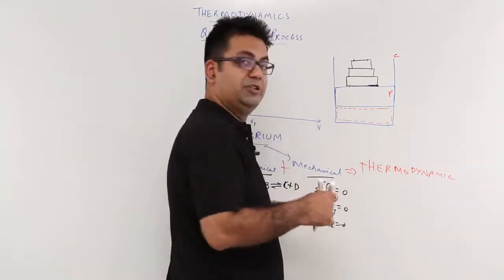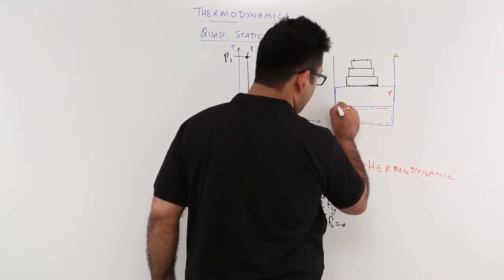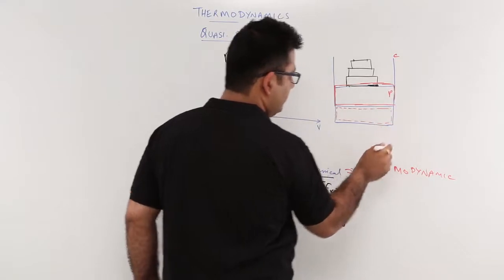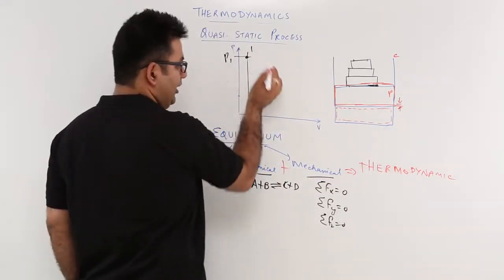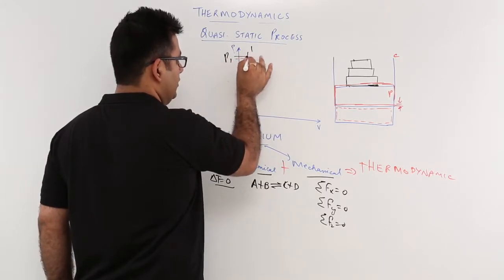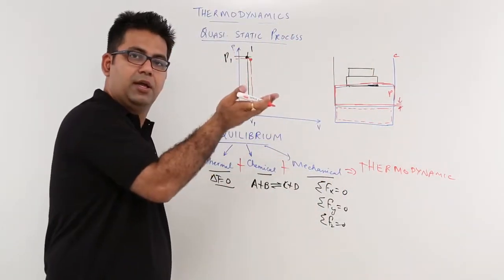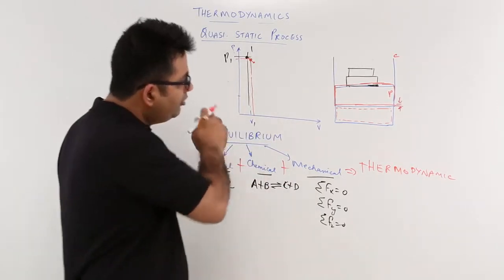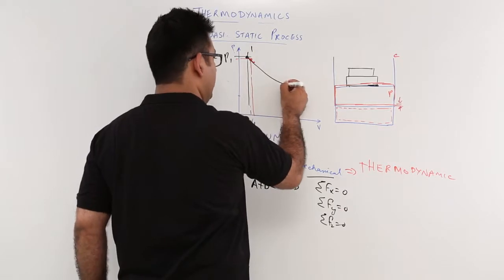The piston will have a new position — not very far, just a very, very small distance through which the piston moves. The pressure has dropped slightly and the volume has increased slightly — this is the new state. Then you remove another weight, and a little bit more upward travel occurs, bringing you to another new state. When you keep removing weights, the piston keeps moving upward, giving you a process from state 1 to state 2.